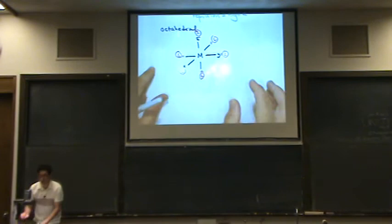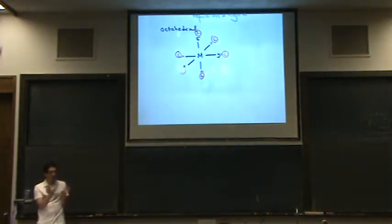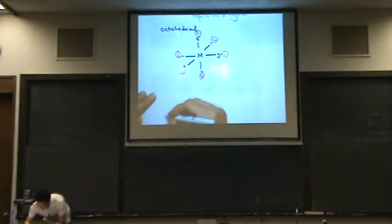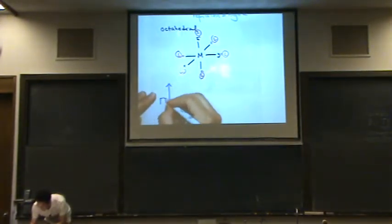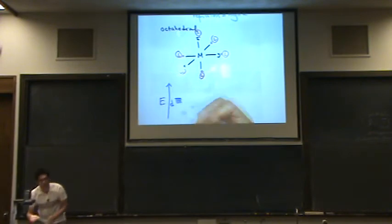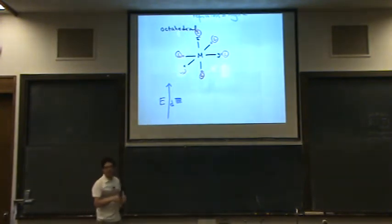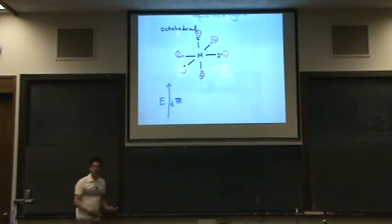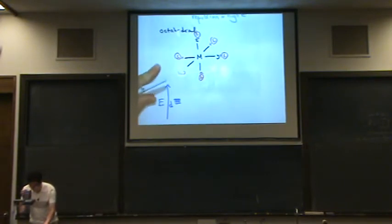To do this, you might want to refer in your notes to those d orbitals, if they're not in your mind already. So we'll go to this next page here. So typically, for your metal, a little energy diagram. For your metal, you know there's five d orbitals. These are the d orbitals. They're all at pretty much the same energy before the ligands come in. When the ligands come in, some will go to lower energy, some will go to higher energy.